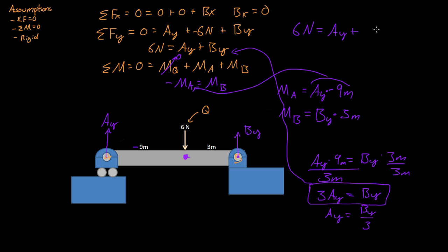Three AY and that is just equal to four AY. So now we have six Newtons must equal four AY and that's 1.5 Newtons. So AY is equal to 1.5 Newtons. Yeah, because four times 0.5 is two. So yeah, 1.5 Newtons.